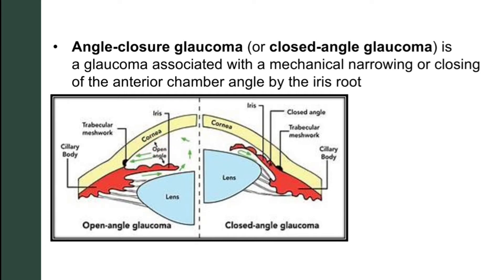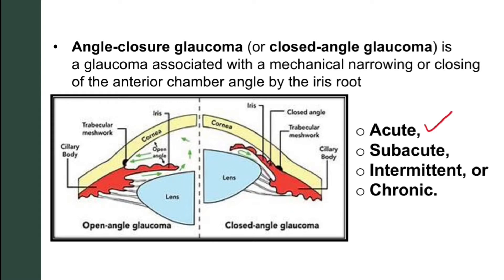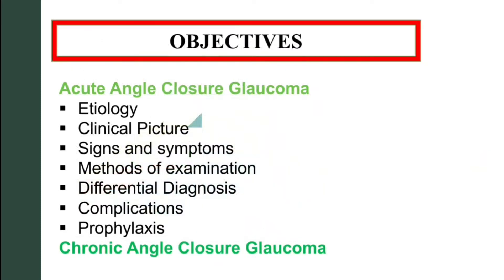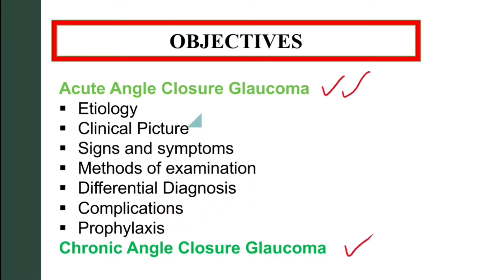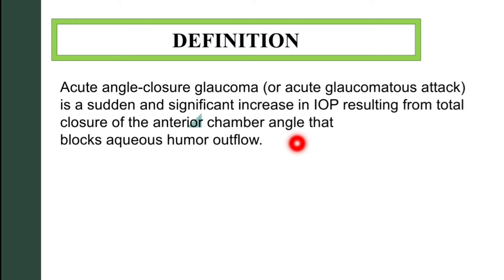Closed angle glaucoma can be classified into acute, subacute, intermittent, or chronic. In this video we are going to focus mainly on acute angle closure glaucoma. We'll talk about its etiology, clinical picture, signs and symptoms, methods of examination, complications, and prophylaxis. We'll also briefly cover chronic angle closure glaucoma.